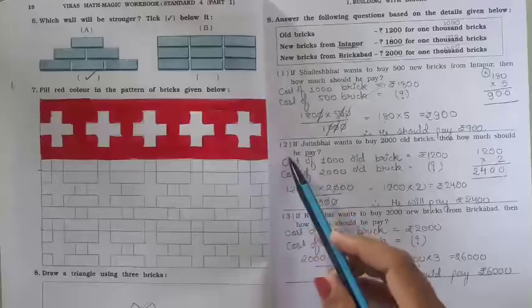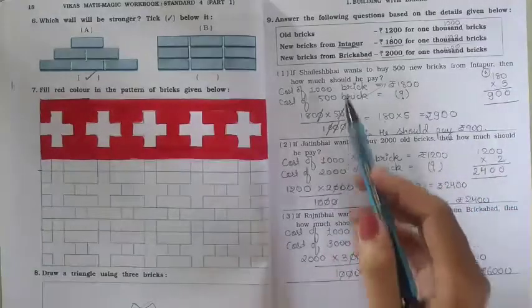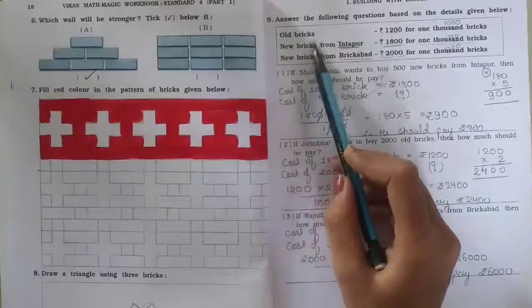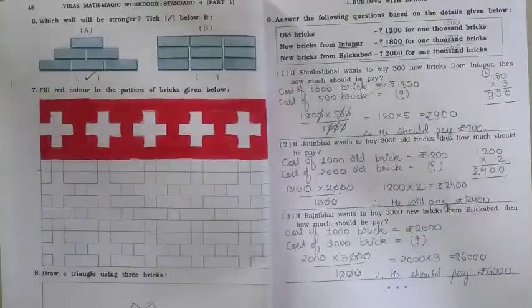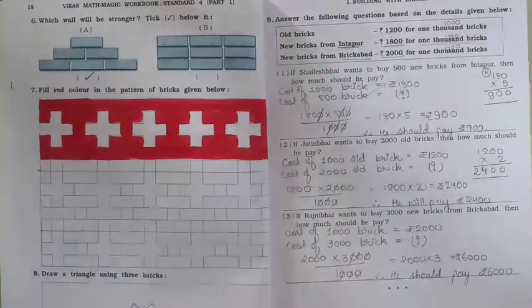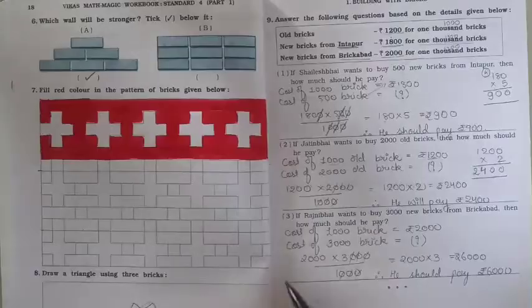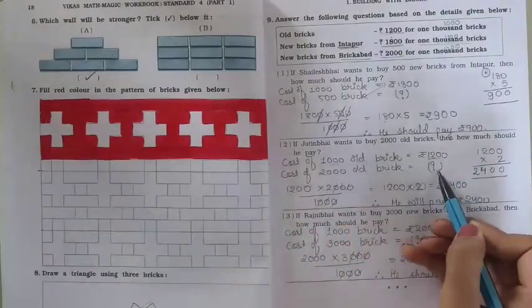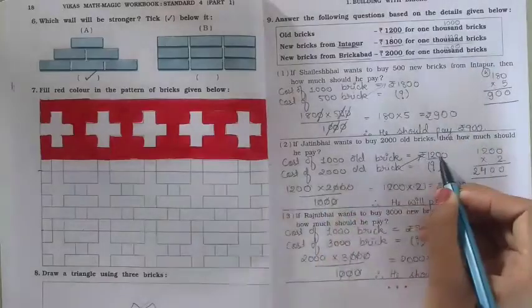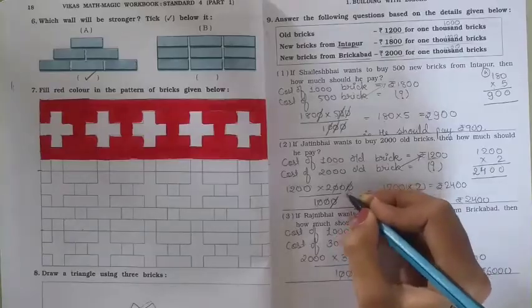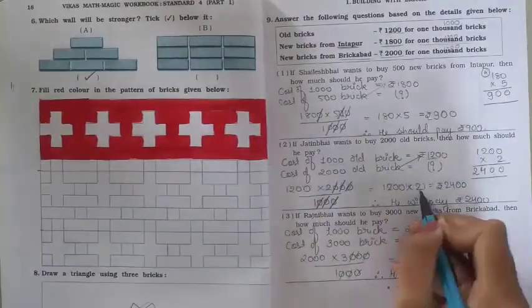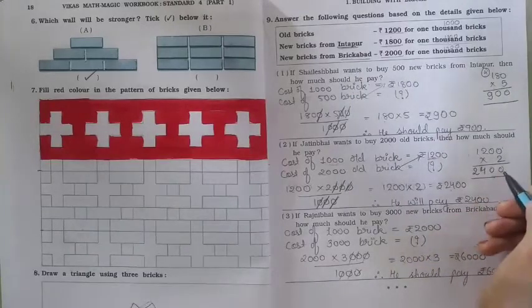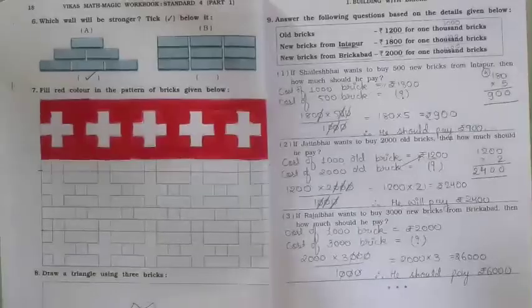Question 2: if Jatin Bhai wants to buy 2,000 old bricks, how much should he pay? Cost of 1,000 old bricks is Rs. 1,200. For 2,000 bricks, price will be double. Cross multiplication: 2,000 × 1,200 ÷ 1,000. Cancel zeros: 1,200 × 2 = Rs. 2,400. Jatin Bhai will pay Rs. 2,400.